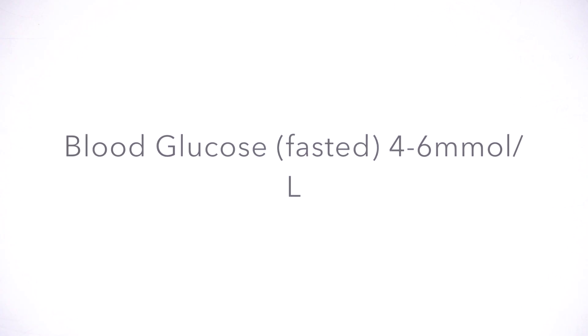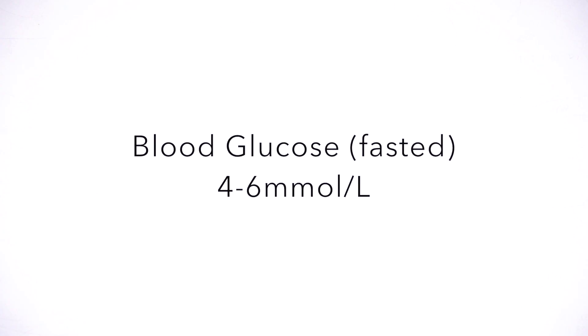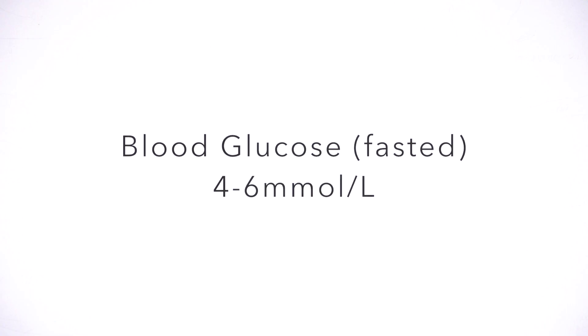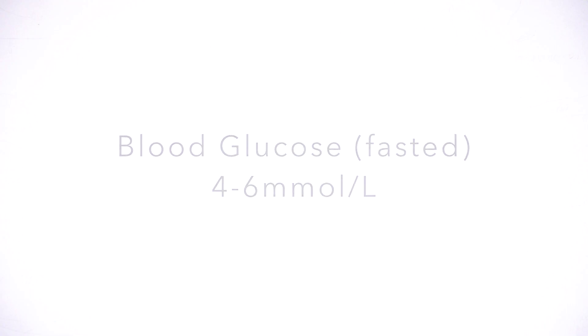In this video we will look at the fasted state, or post-absorptive phase — what happens a few hours after we have eaten, when all the glucose and fats have been stored away. In the fasted state, the body will try to maintain blood glucose levels, which are normally about 4 to 6 millimoles per liter, so that there is enough glucose supplying our brains and other tissues that need it.